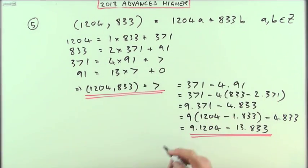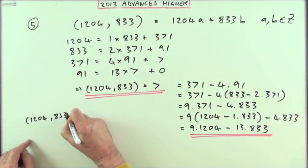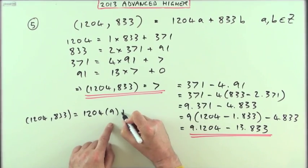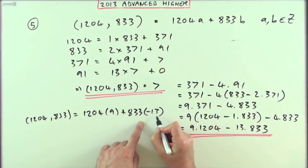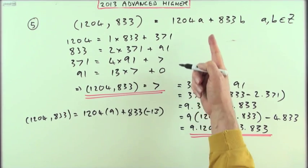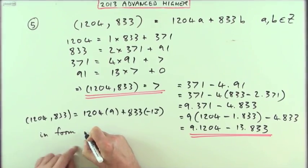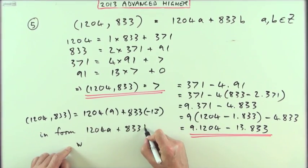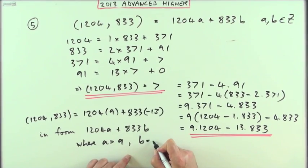Finally putting it into the required form: GCD(1204, 833) equals 1204 times 9 plus 833 times negative 13. To be extra safe, I can state the values of a and b explicitly: the answer is in the form 1204a plus 833b, where a equals 9 and b equals negative 13.